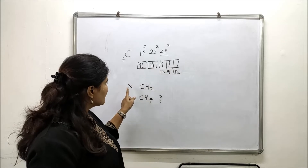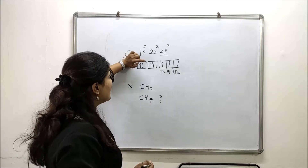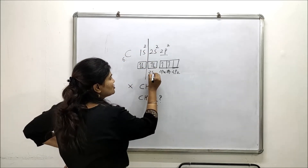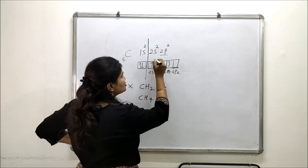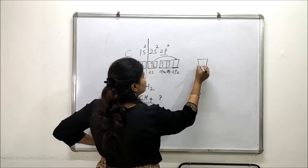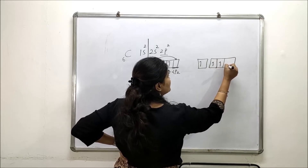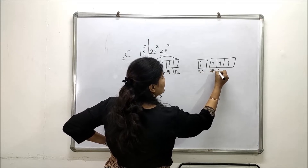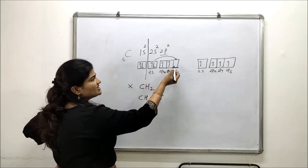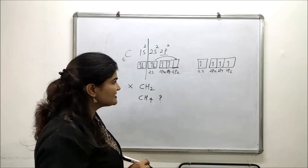To answer how carbon forms CH4, a theory was proposed. The outermost shell of carbon is the second shell, and one electron from the 2s orbital is promoted to the empty 2pz orbital. This gives an excited state configuration of 2s1, 2px1, 2py1, and 2pz1 — four unpaired electrons, or four half-filled orbitals, which can form four bonds.